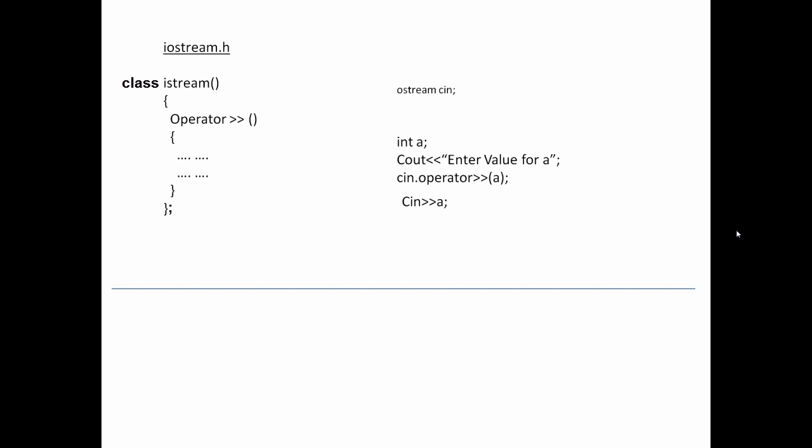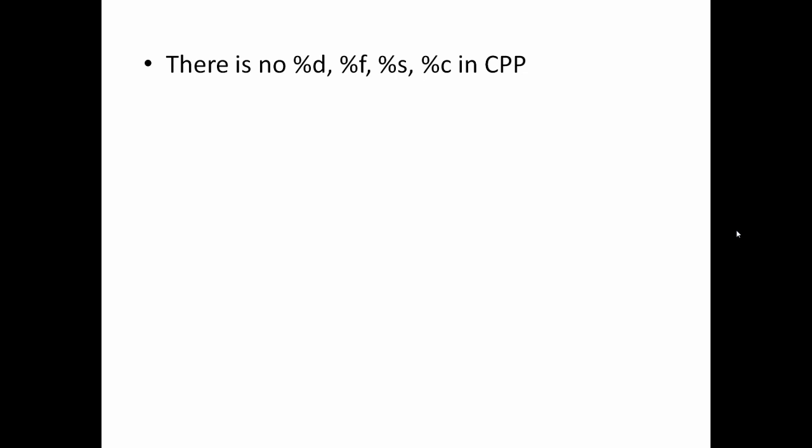We can write the object name once and call the insertion operator as many times as required. Similarly, we can write cin once and call the extraction operator as many times as we want. This is the insertion operator followed by argument — this works fine in C++. We can use the extraction operator for cin: write cin once and accept as many values as you want. This is completely valid syntax. Note that there are no formatting strings in C++; we directly get values using variable names.